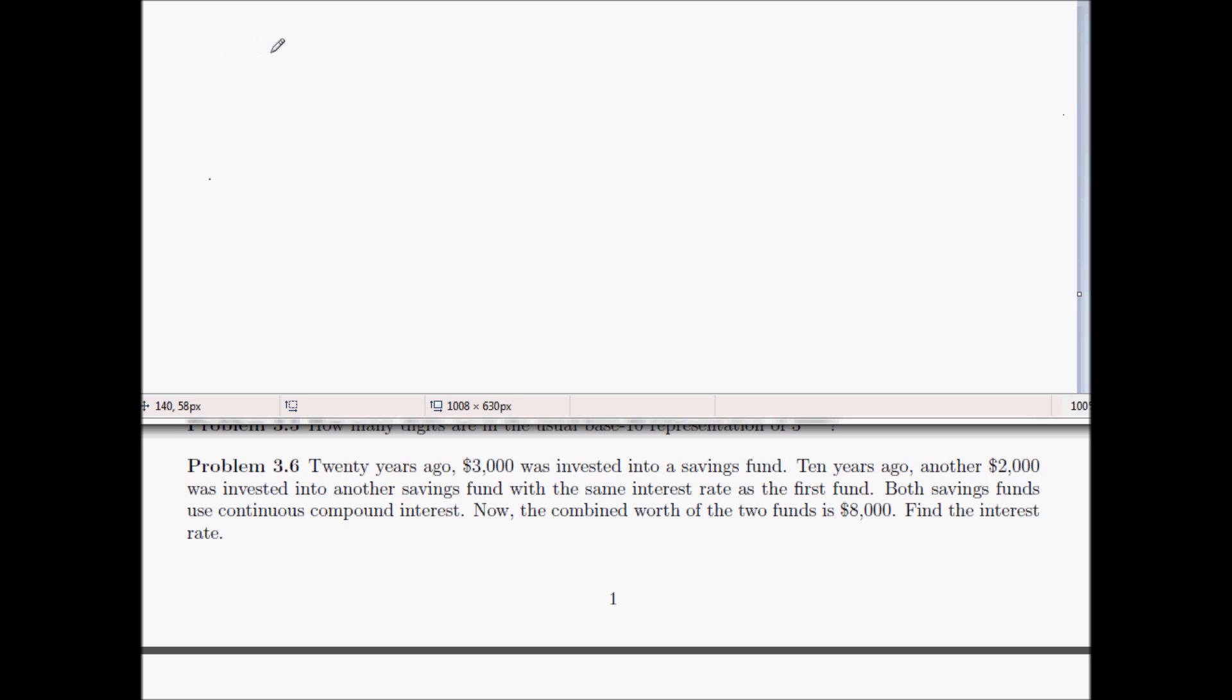So to do this problem, the amount that the first $3,000 is worth is going to be 3,000 times e to the 20r using the formula for continuous compound interest. If the rate is r, then that's how much the money is worth now, at least the first $3,000.